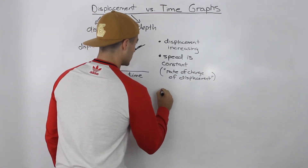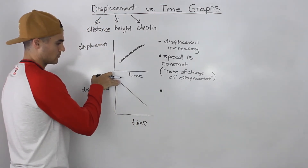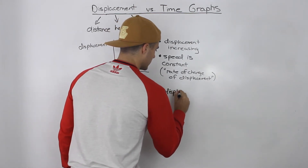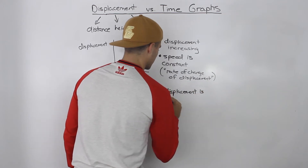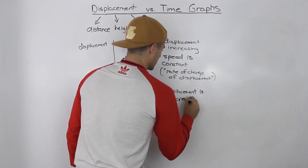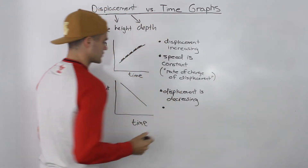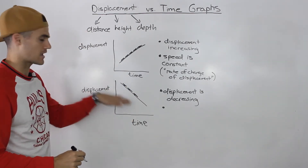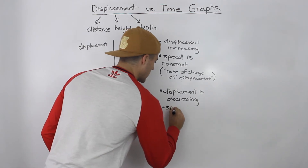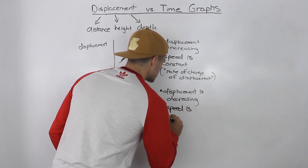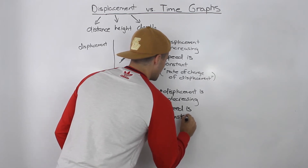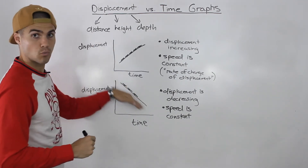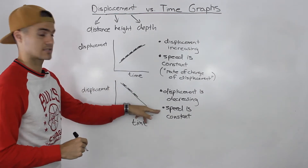What about a graph with a straight line with a negative slope? This graph is decreasing, meaning the displacement is decreasing. What about the speed, the rate of change of displacement? If you draw a tangent at any point on this line, it's always going to have the same slope. So in this case as well, the speed is constant. It's maybe going down a hill or moving back towards us at a constant speed.